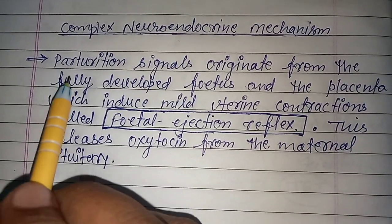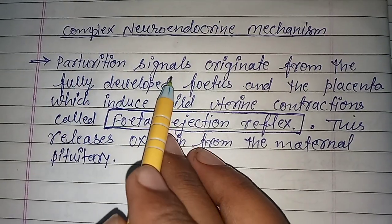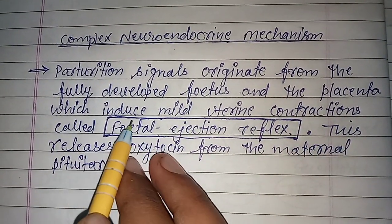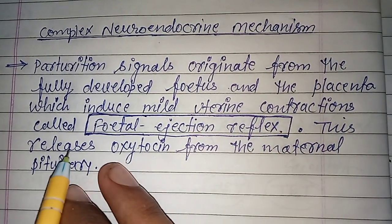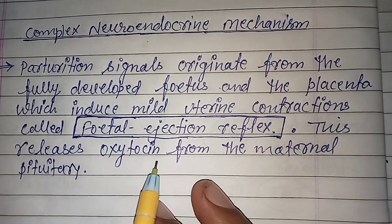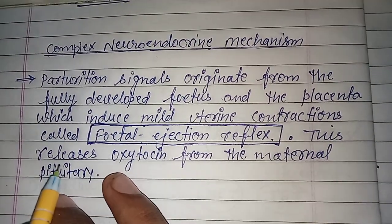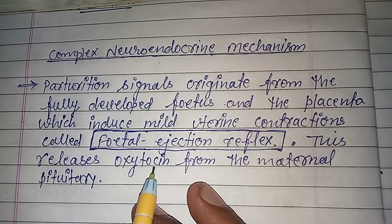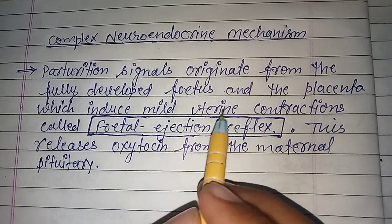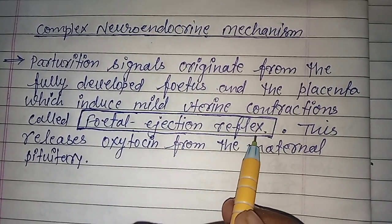Complex neuroendocrine mechanism میں parturition signal originated from the fully developed fetus and the placenta, which induces mild uterine contraction called fetal ejection reflex. This releases oxytocin from the maternal pituitary۔ Oxytocin hormone fetus کو باہر نکلنے میں uterine contraction کے ذریعے help کرتا ہے، جس کو fetal ejection reflex کہا جاتا ہے۔